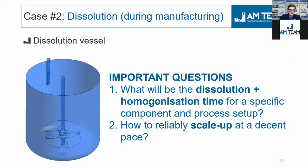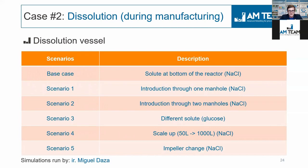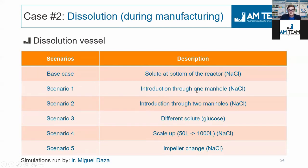We did a couple of scenarios: a base case starting vessel and then five other scenarios. We played with the solutes — for example, comparing sodium chloride dissolution versus glucose. Glucose dissolution rate is much lower than sodium chloride. We looked at how the introduction strategy through the manholes impacts performance: one manhole versus two manholes. We looked at the scale: a 50-liter vessel versus a 1,000-liter vessel. And we also did something with the impeller.